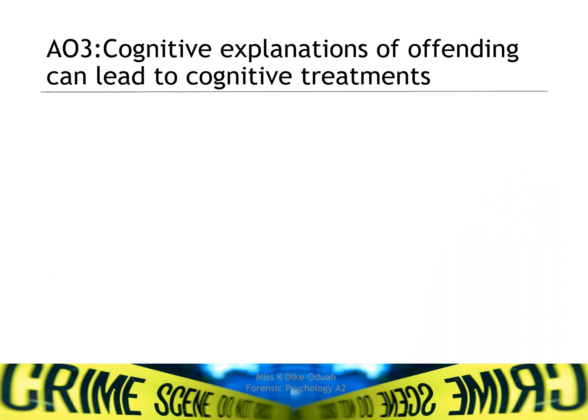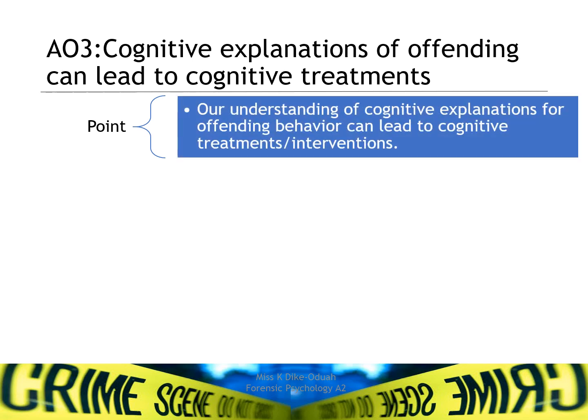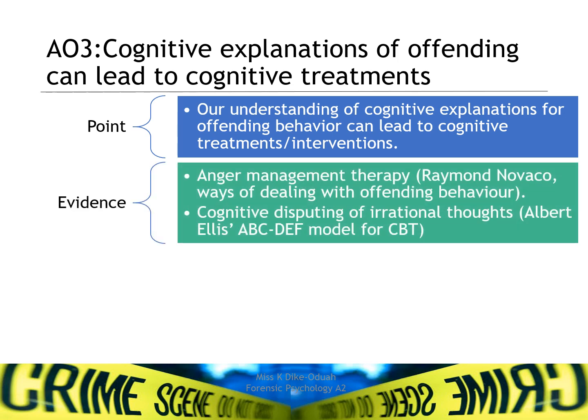The last AO3 point before moving on to Kohlberg is that cognitive explanations of offending can lead to cognitive treatments. If we understand that people are thinking irrationally and these irrational thoughts lead to criminal behaviour, then psychologists can tackle that irrational thinking with treatment. We know that anger management is one approach, and also cognitive disputing from Albert Ellis' ABC model — specifically the DEF part, where D stands for disputing.